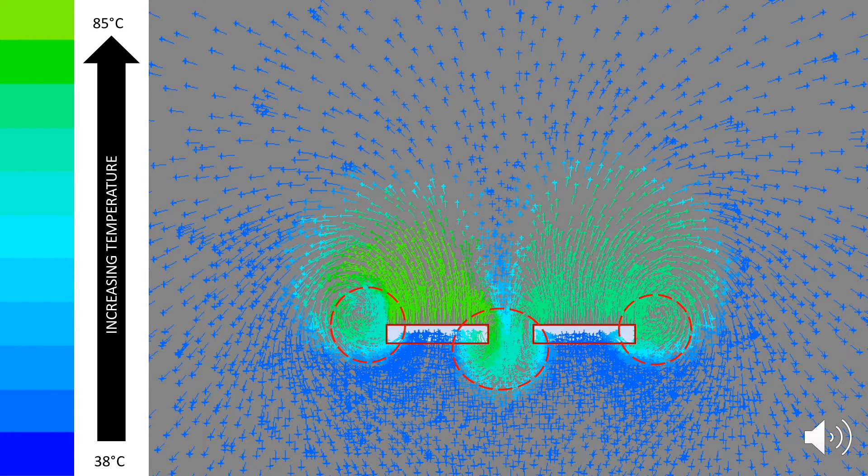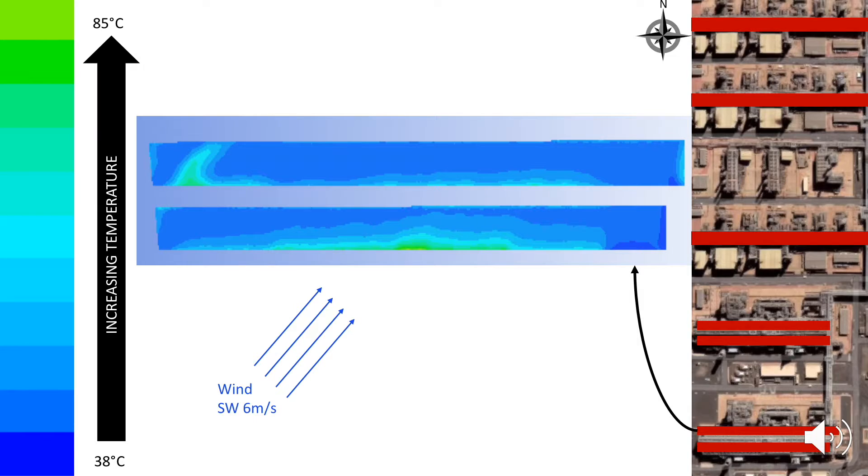But why does air recirculation happen? This is because high wind speeds create low pressure zones. The area of low pressure zone tends to draw in air faster and especially hot air because it has more energy.